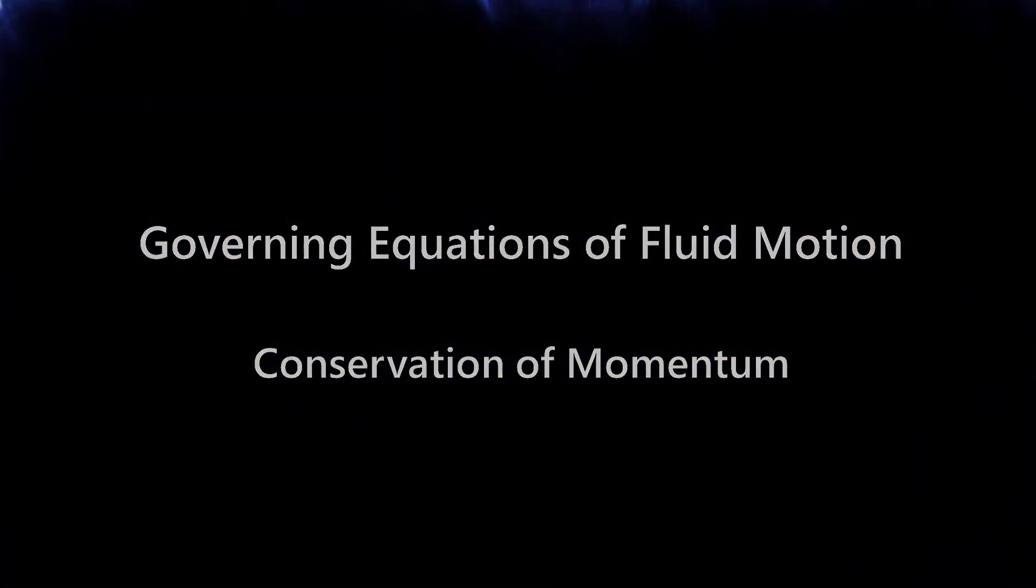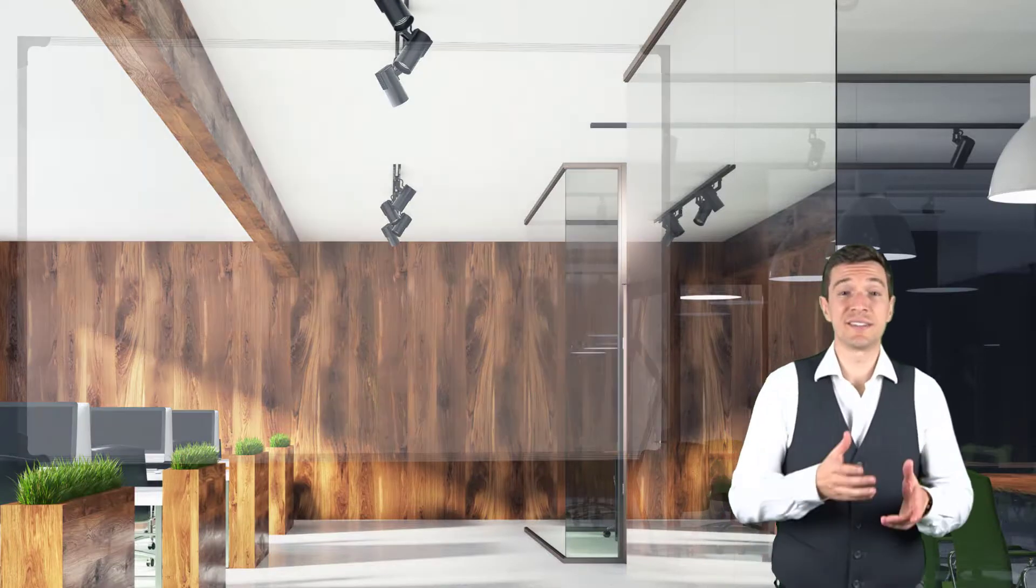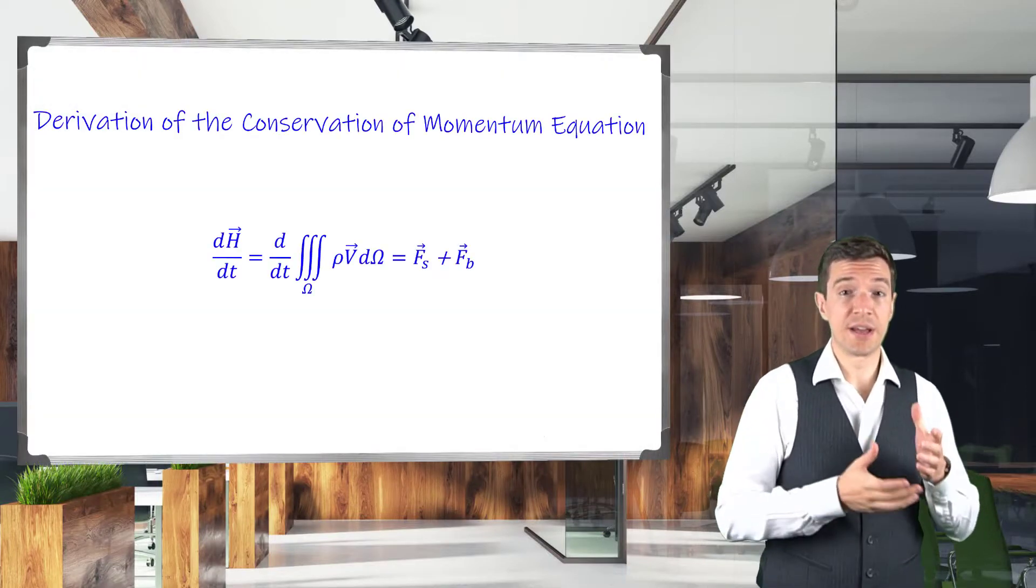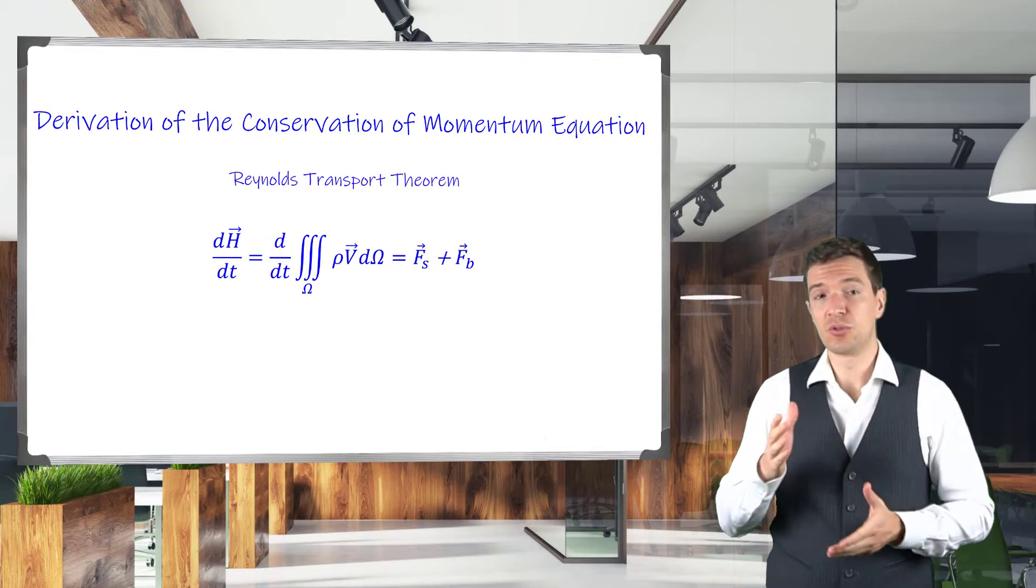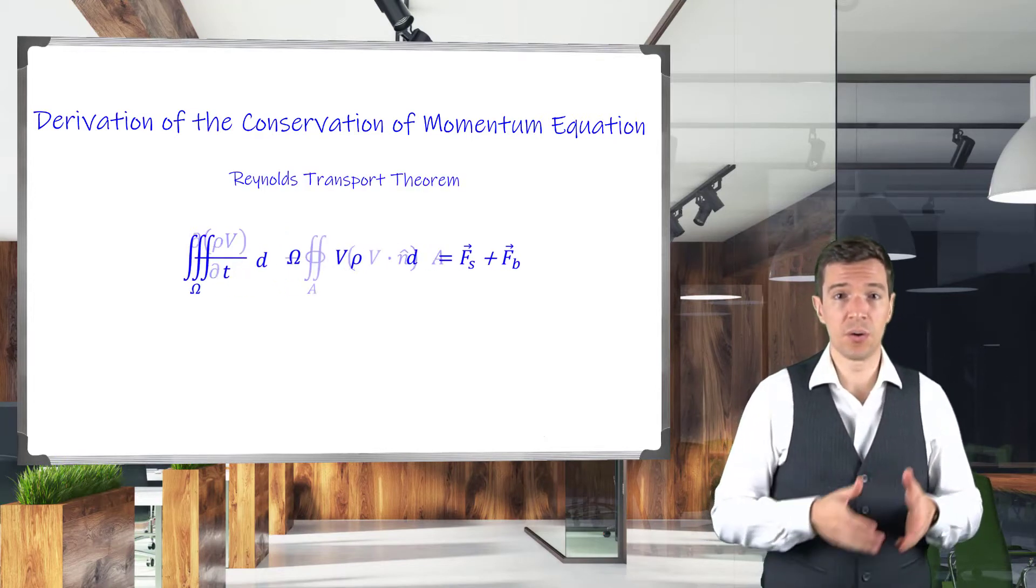So, let's now start and analyze the conservation of momentum. Starting from the Lagrangian form of the equation, we can use the Reynolds transport theorem to convert the equation into the Eulerian framework.